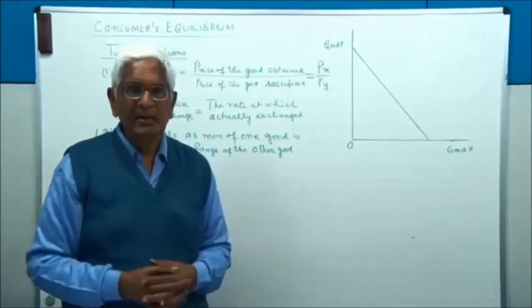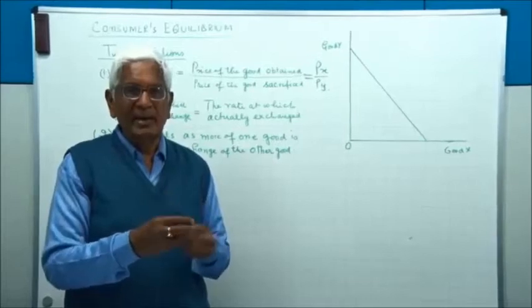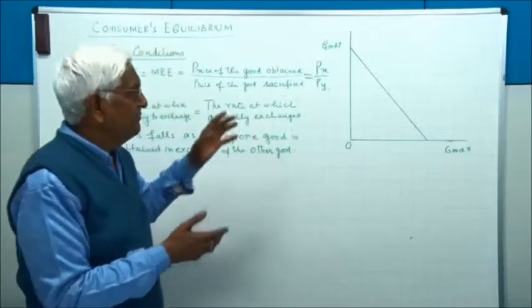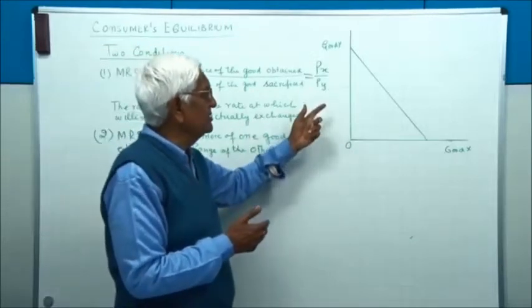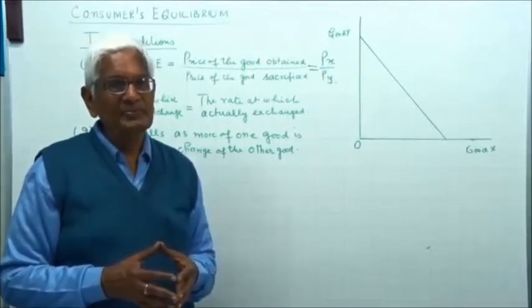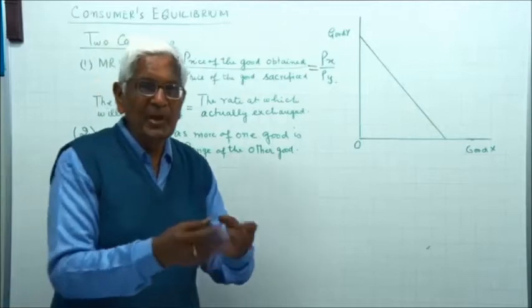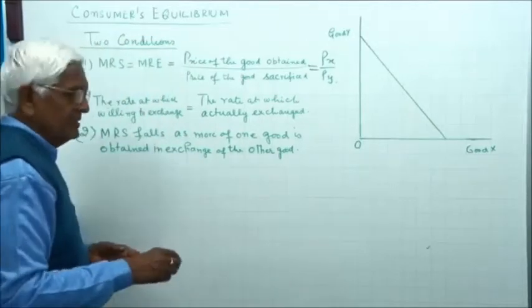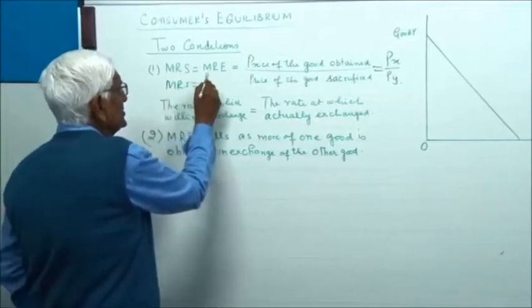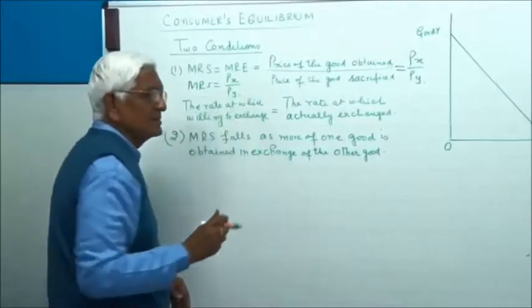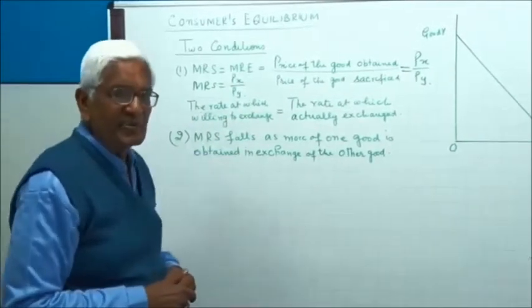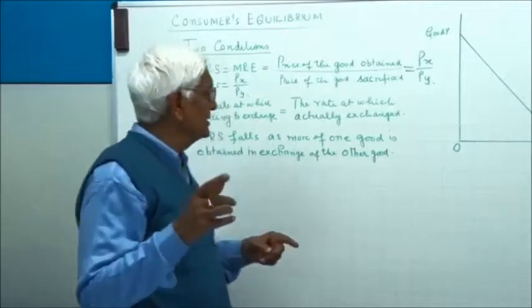MRE is the slope of the budget line, and MRE is equal to Px upon Py when we take X on the X axis and Y on the Y axis. So from now onwards, our condition becomes MRS is equal to Px upon Py, on the assumption that X is represented on the X axis and Y is represented on the Y axis.